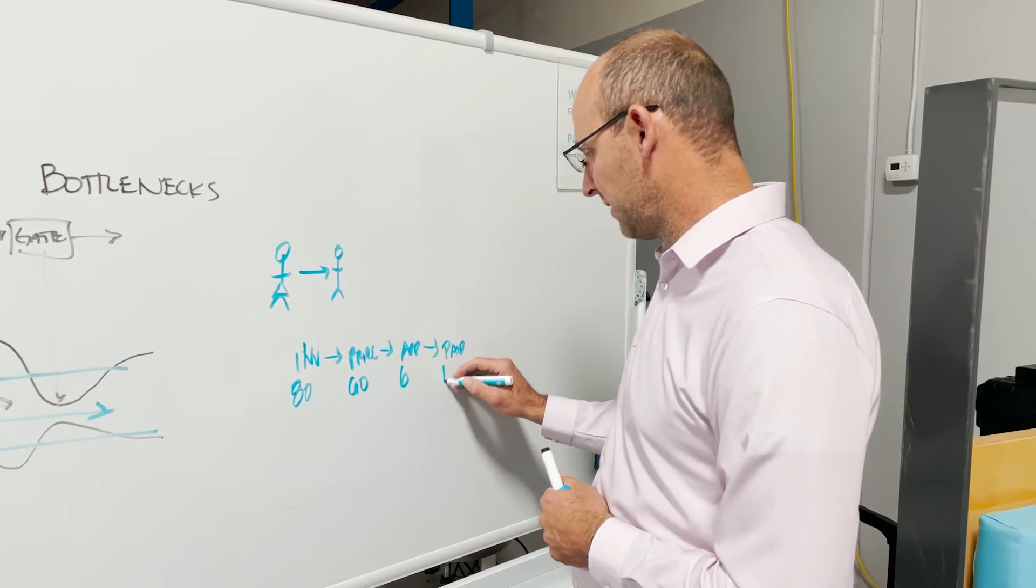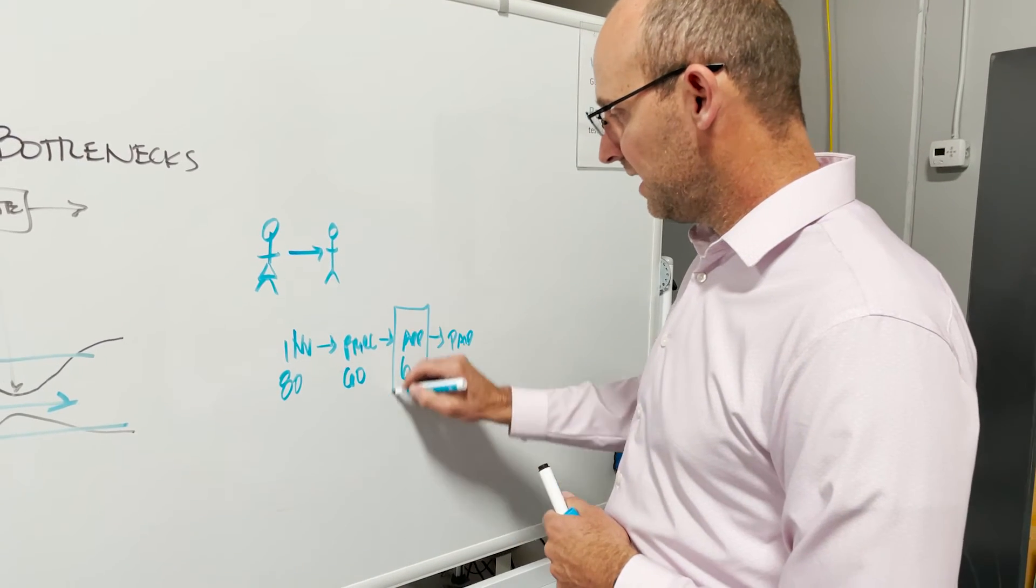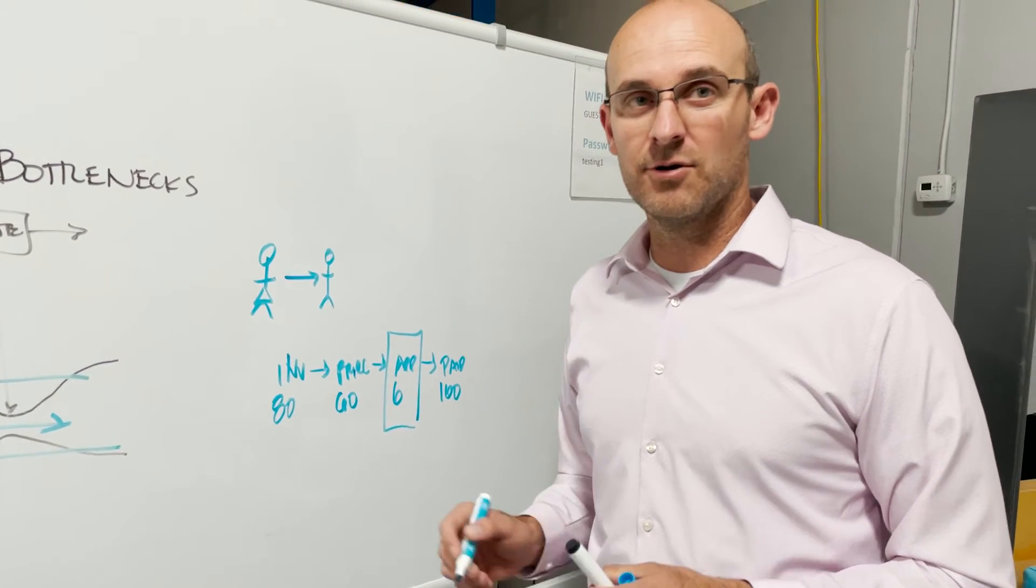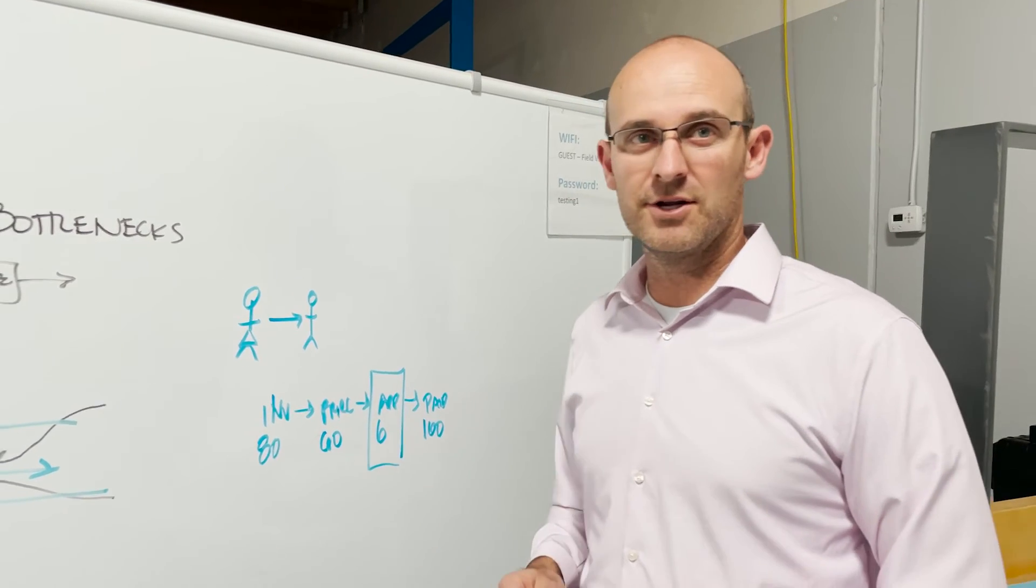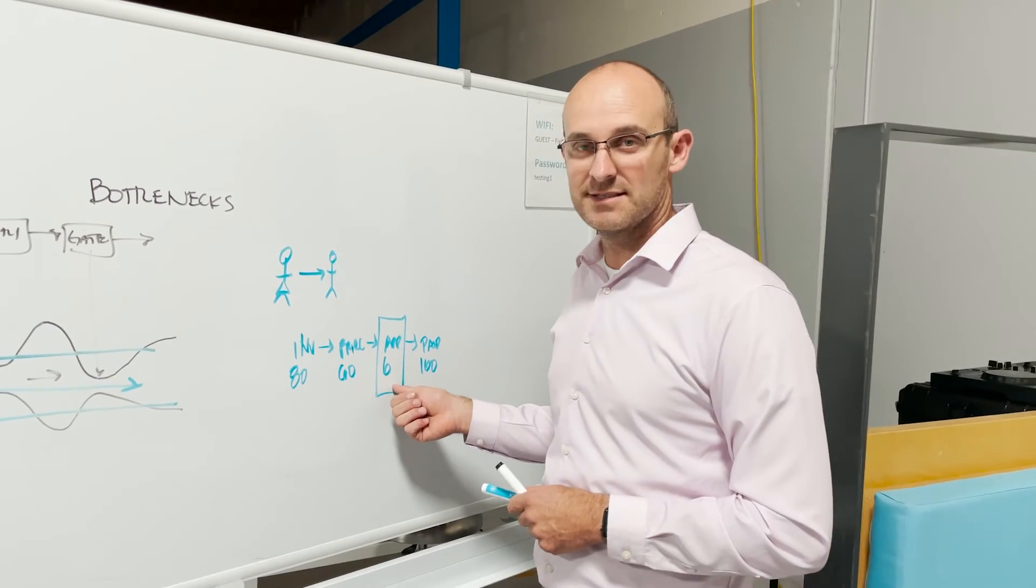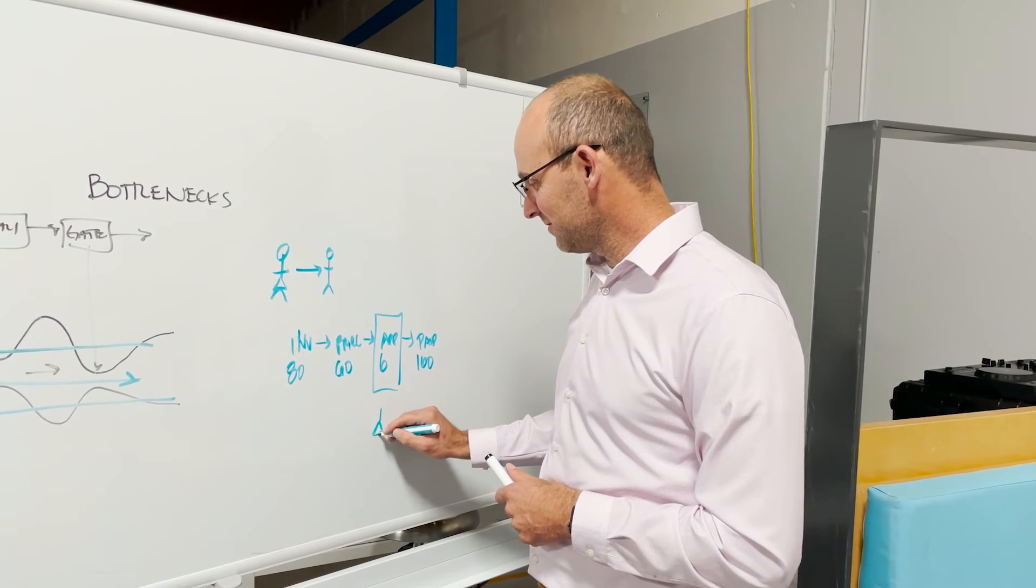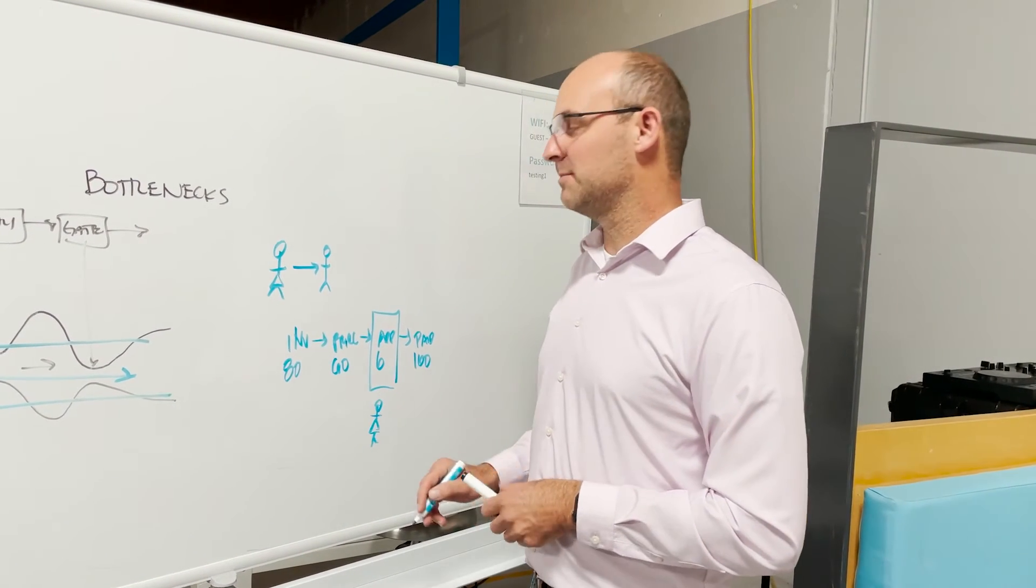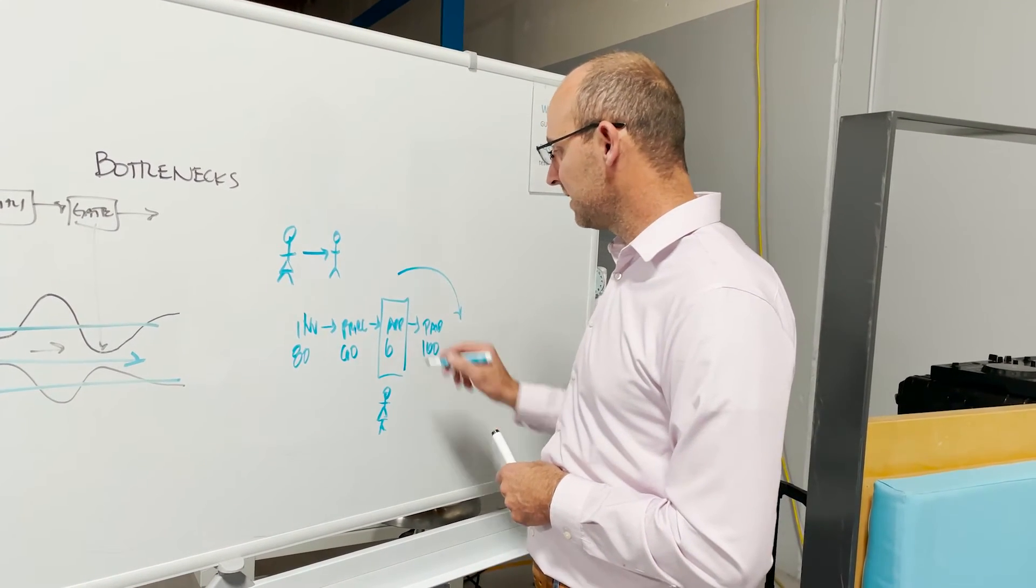She can approve like six an hour, I think that's what it said in the book. They can pay like 160 an hour. So he was like, 'Where's your bottleneck?' It's right here in the approval process. She was like, 'Oh my gosh, I can immediately fix that bottleneck.' He was like, 'Oh, how do you know?' And she said, 'Well, because I'm that step.'